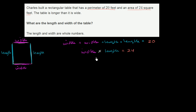Now there are a lot of ways to solve this problem. Later on, when you learn more algebra, there are fancy algebraic ways to do that. But we won't have to resort to that. They tell us that the length and width are whole numbers, so we should just be able to try out some numbers. We know that the width times the length is 24, so we just have to try out all of the whole numbers — the factors of 24 — and figure out which of those satisfy the perimeter condition where two times the width plus two times the length equals 20.